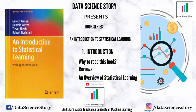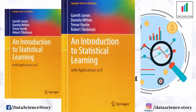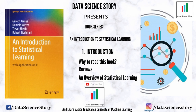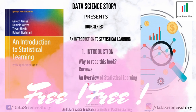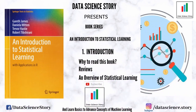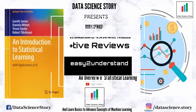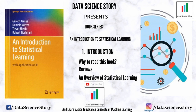Authors Gareth James and Daniela Witten basically summarized that book and tried to explain the concepts in a very lucid manner. Their book is named 'Introduction to Statistical Learning,' and that is the one we are going to cover in this book series. The very good part of this book is that it is freely available on the internet — you can simply Google its name and find it. It also has very good reviews and is known for its end-to-end chapters and easy-to-understand methodology.